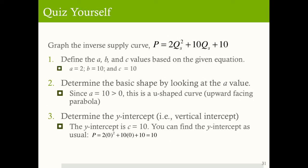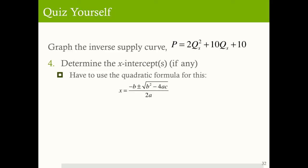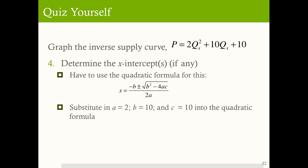Alright, so let's start with steps 1, 2, and 3. Based on the equation, a is identified as 2, b is identified as 10, and c is identified as 10. As far as the basic shape: a is equal to 2, which is greater than 0, so I know that my curve is going to be u-shaped. The y-intercept, the vertical intercept, is going to be equal to 10.